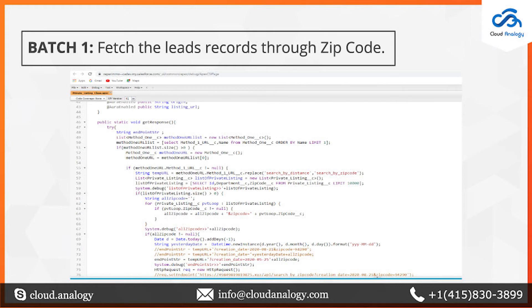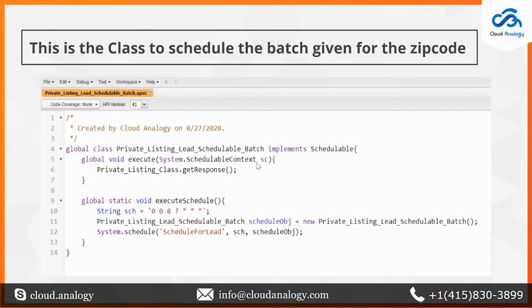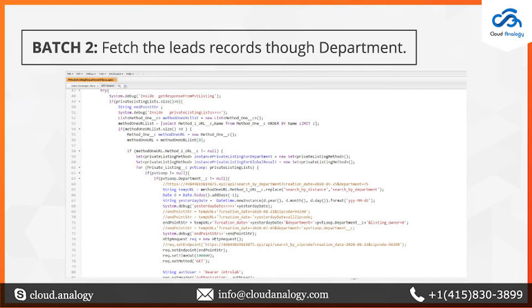We store all the lead records in the Private Listing, which is a custom object created by us. Private Listing records have two fields: Department and Zip Code, containing the zip code or department through which it was created. You can also schedule the batch class at whatever time you want to automatically create the leads.